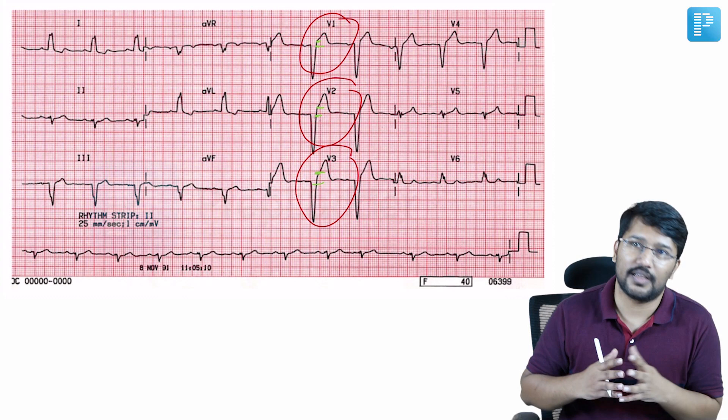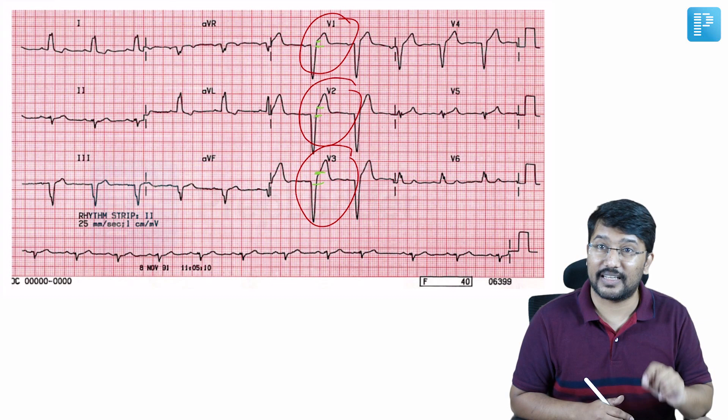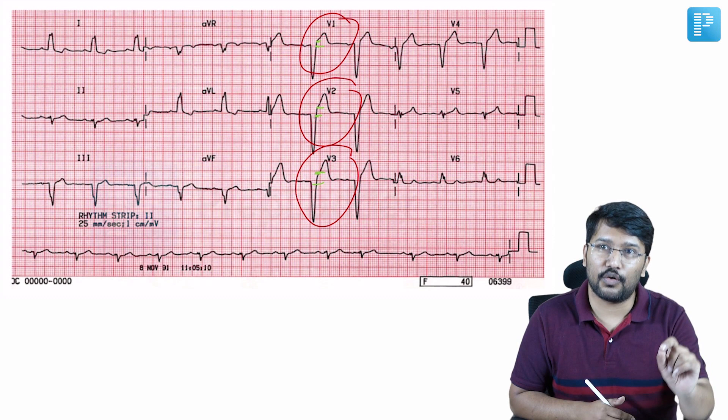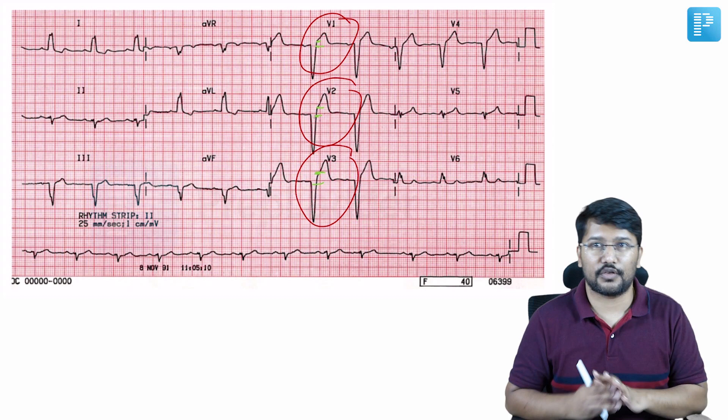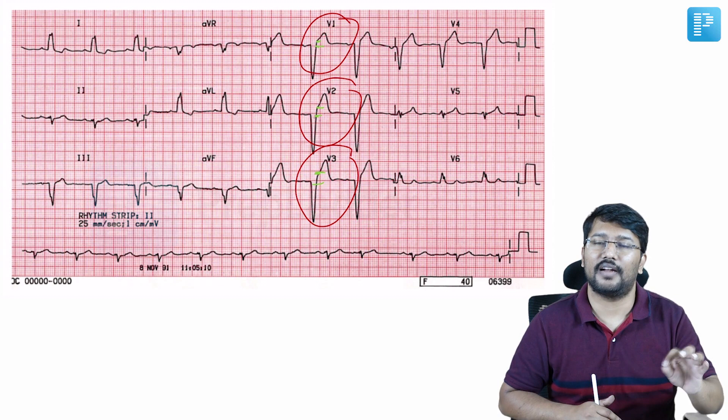But whenever there is concordant ST elevation — when I say concordant, that means the ST elevation is in the direction of the predominant QRS complex. In other words, we are having predominant R waves and the QRS complex is predominantly positive and not negative. When we see that, it is strongly suggestive of ischemia. This is the basic understanding.